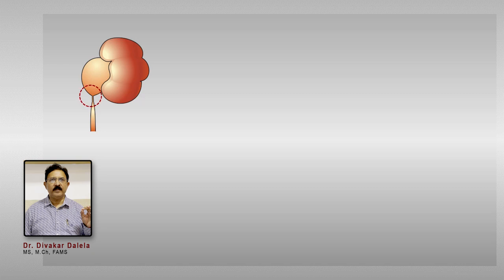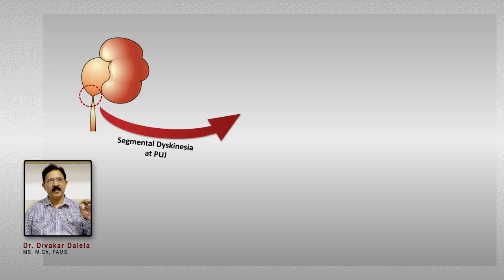The site of obstruction in a patient is the place where the pelvis changes into the ureter — the pelvi-ureter junction. It is known as PUJ obstruction; some people call it UPJ obstruction — it is the same thing. The main reason of its occurrence is a kind of dyskinesia in that small portion of ureter which joins the pelvis, and a segment is involved in this kinetic process.